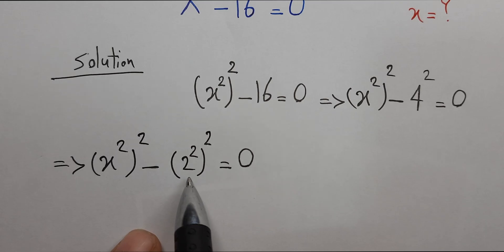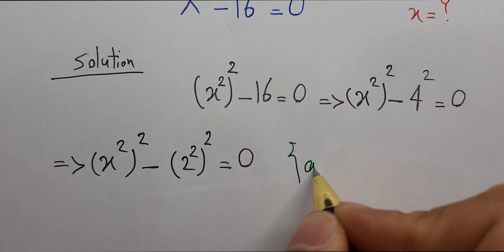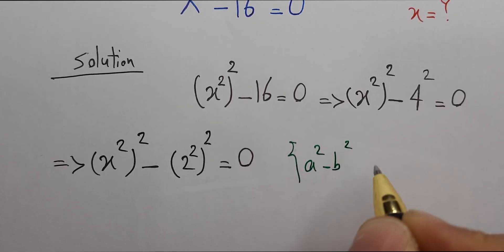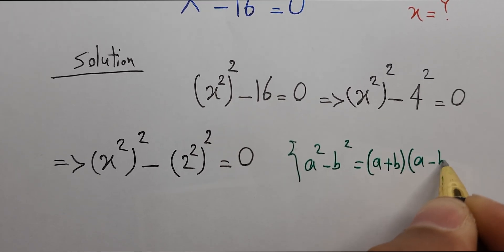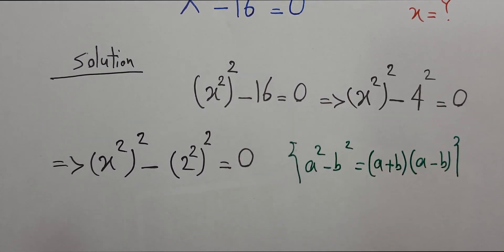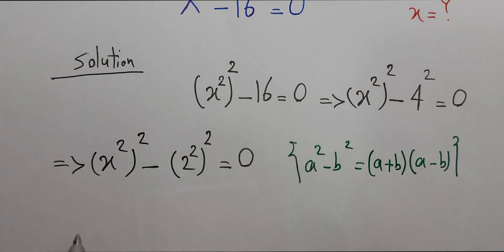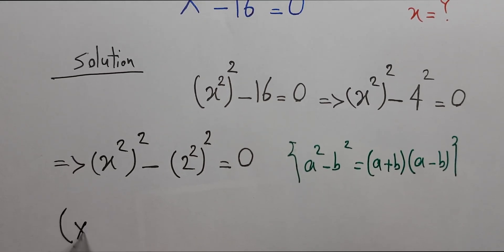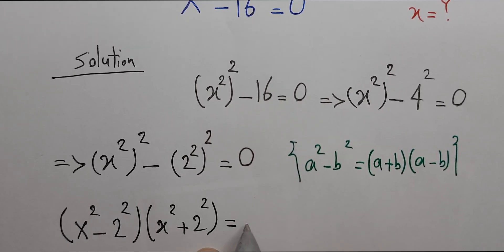As you know, this is the form of an identity: a squared minus b squared equals (a plus b) times (a minus b). According to this identity, we can write (x² - 2²)(x² + 2²) equals 0.